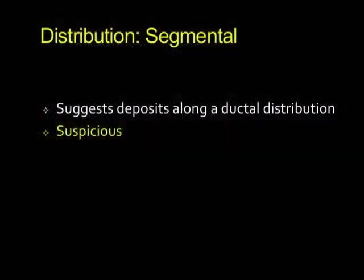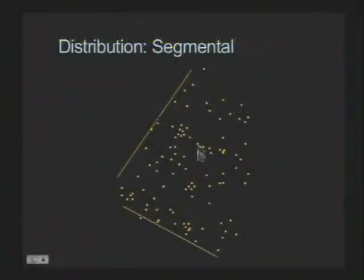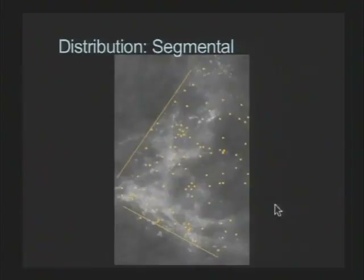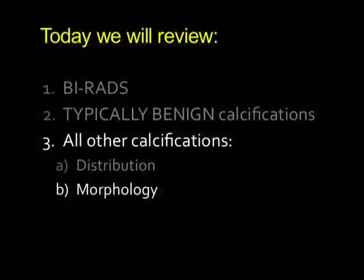Segmental distribution is the most suspicious distribution. It suggests deposits along a ductal distribution and is very suspicious. You can see calcifications lining up, pointing towards the nipple. It doesn't really matter what sort of calcifications you have — those are highly suspicious and you would definitely biopsy them.